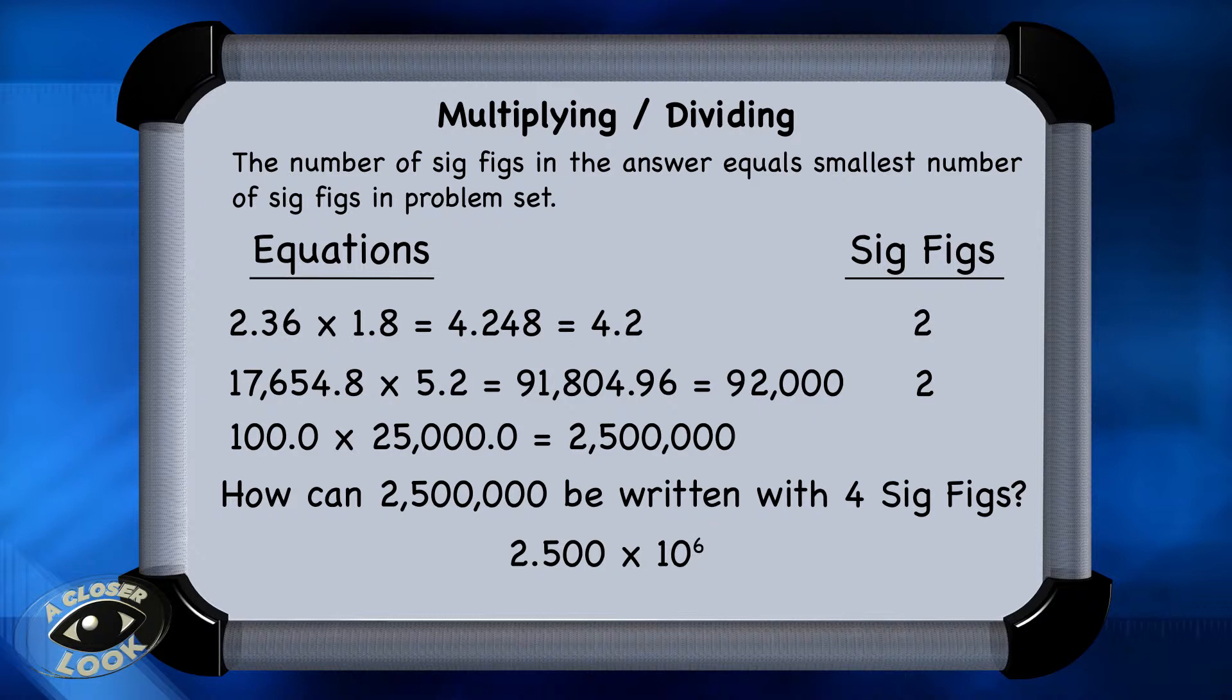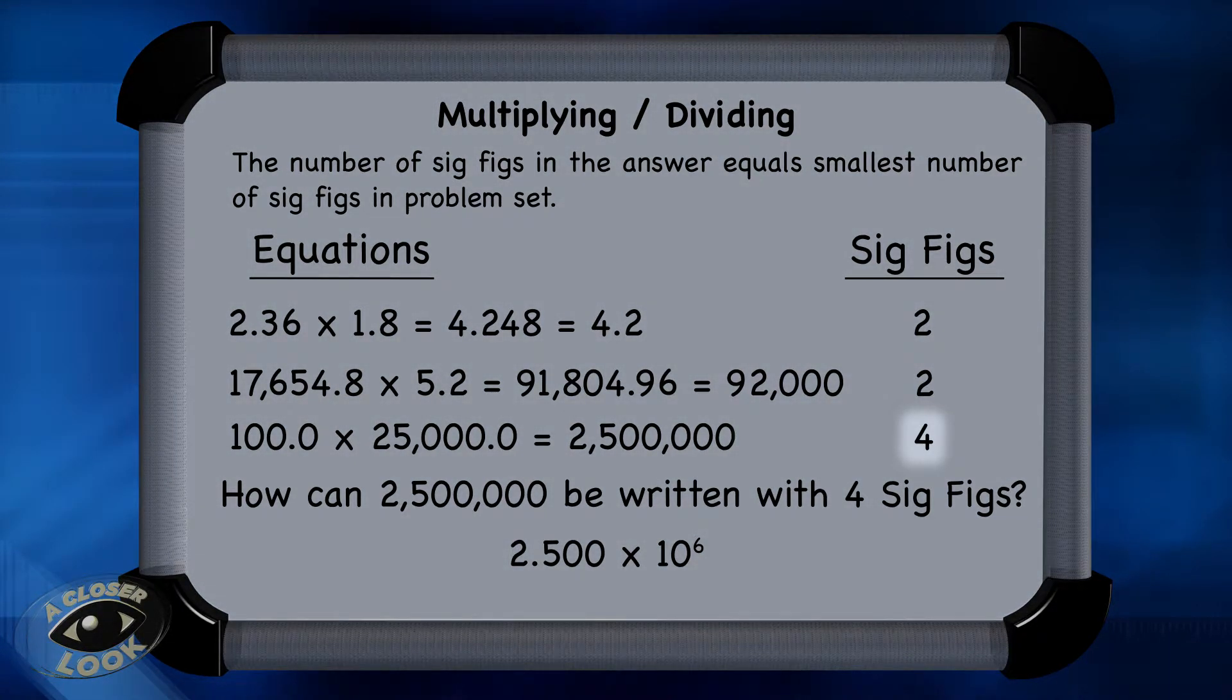Because when reporting a number in scientific notation, the number of sig figs present at the beginning, before the times 10, is representative of the number of sig figs in scientific notation. So since there are four sig figs in 2.500, there are four sig figs in the number.